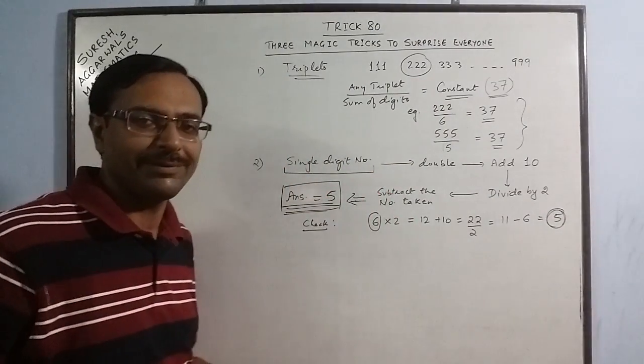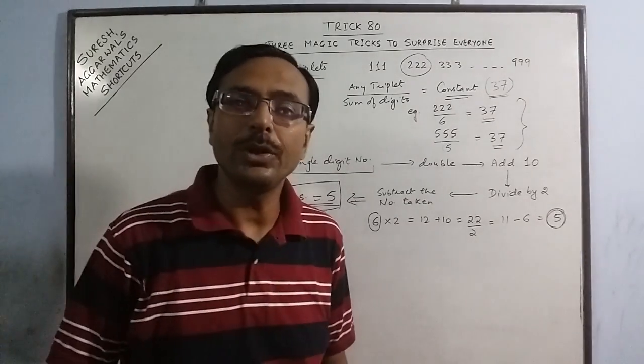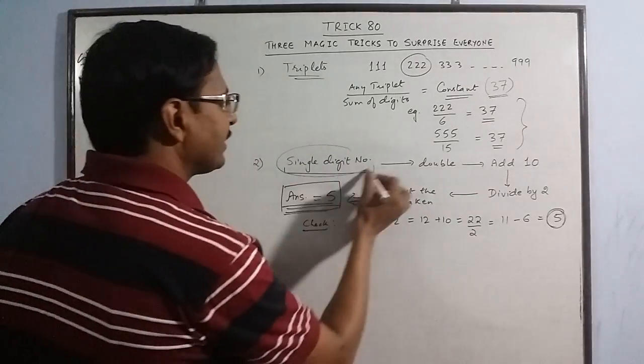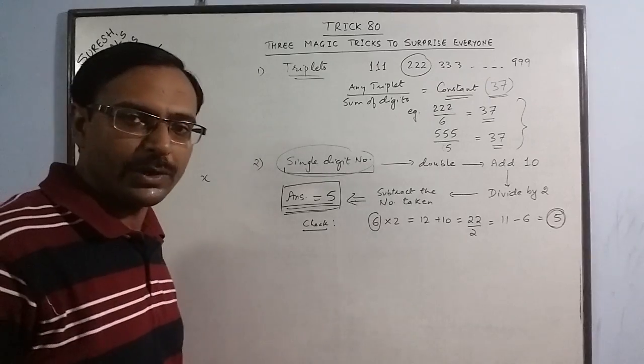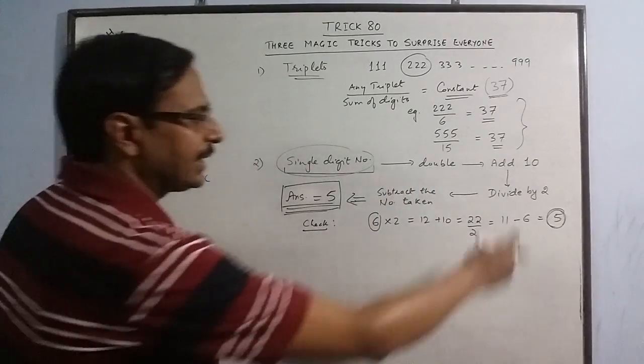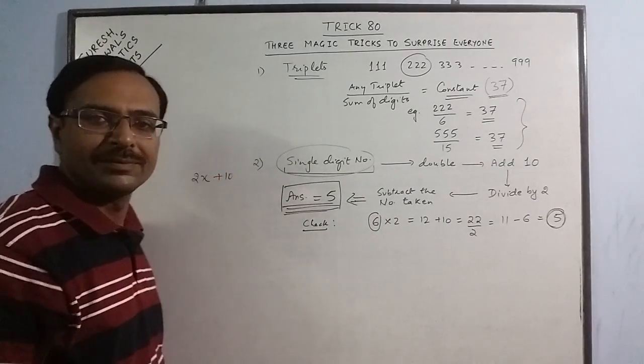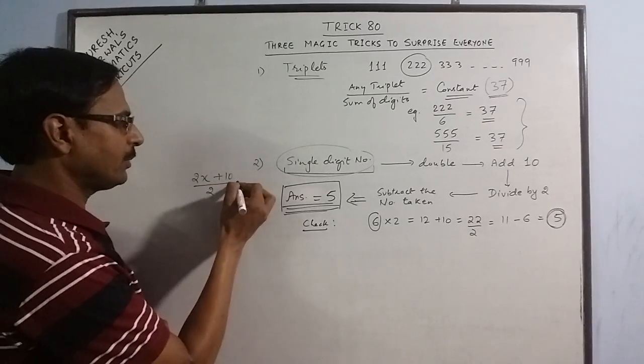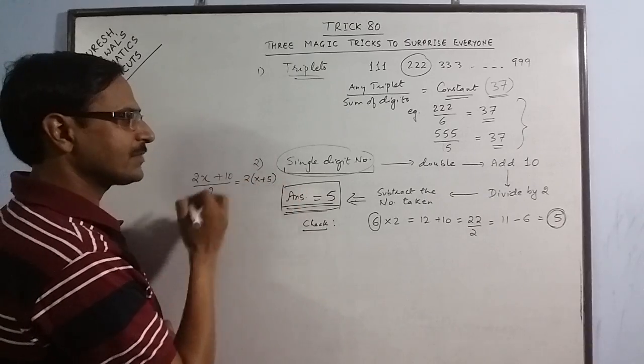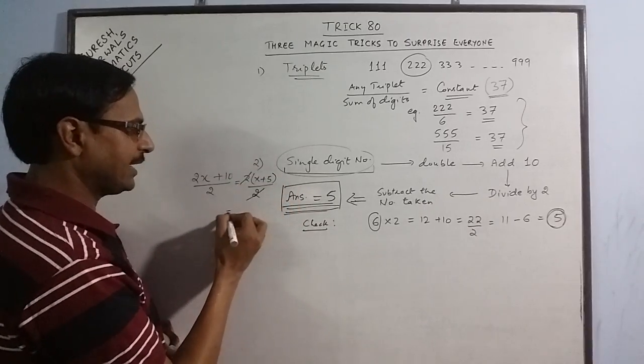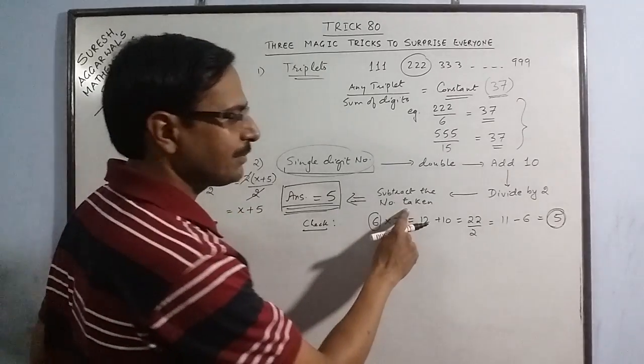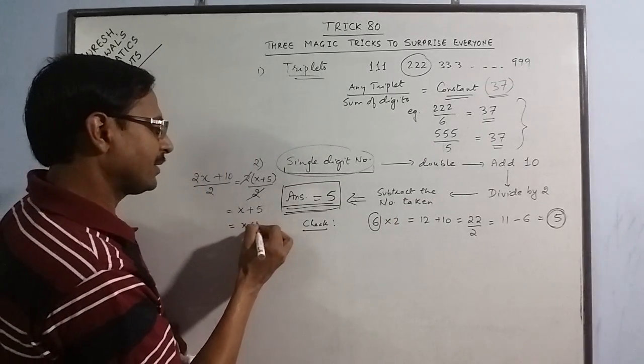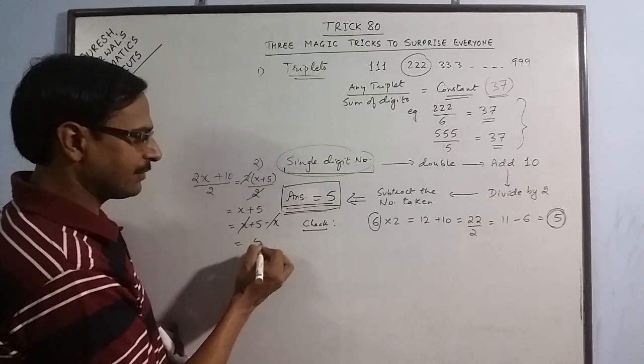The answer is 5, and in the beginning of this trick I told you that you can formulate this trick. Here also, see how. Suppose we have taken this single digit number as x. So what we are doing is we are doubling this, so 2x, then adding 10, plus 10, then divide by 2. Now when we divide 2x plus 10 by 2, 2 is a common factor here, so we are left with 2 into (x plus 5). So 2 cancels out, we are left with x plus 5. Now in the last step we were asked to subtract the number taken. The number taken here was x, so now if we subtract x from this, obviously the answer will be 5.